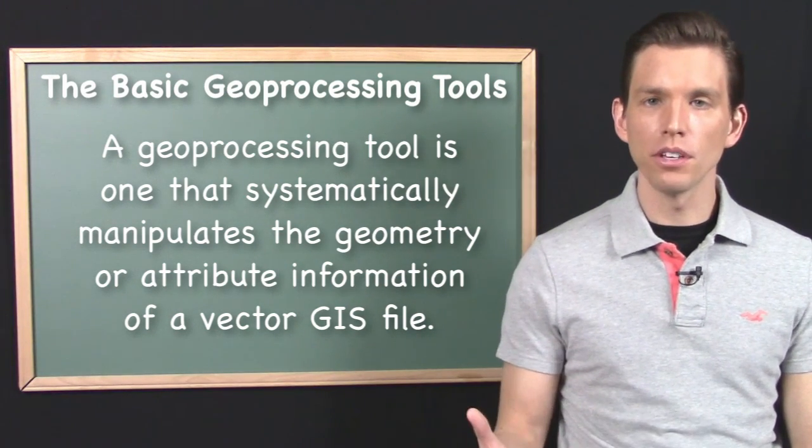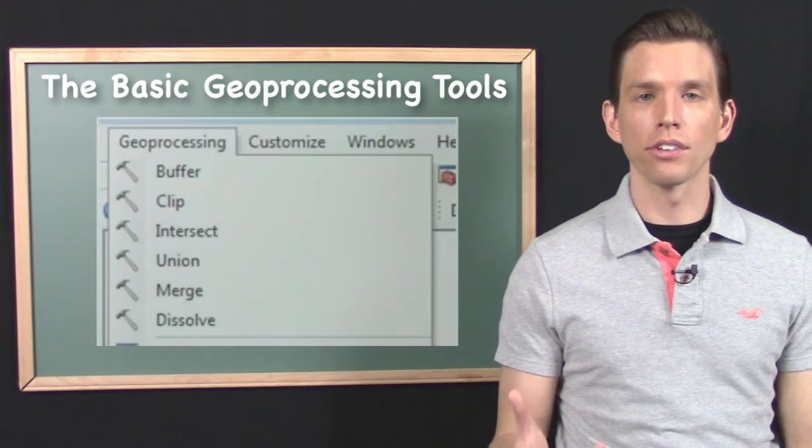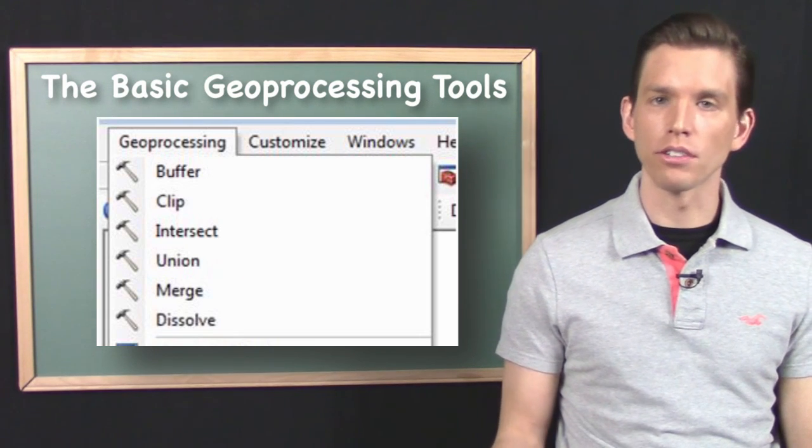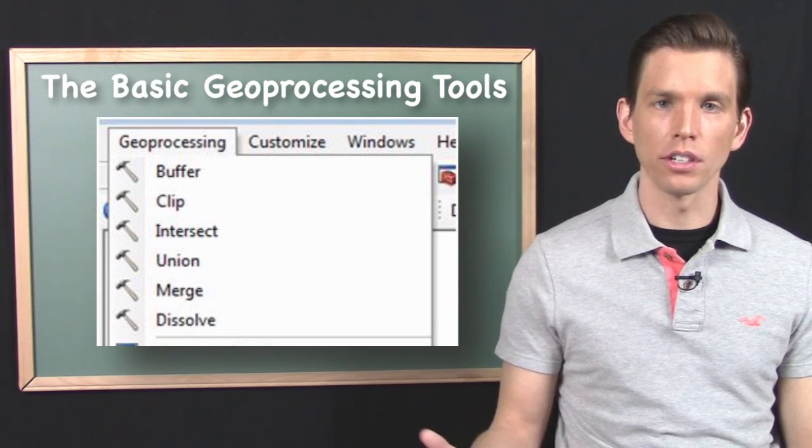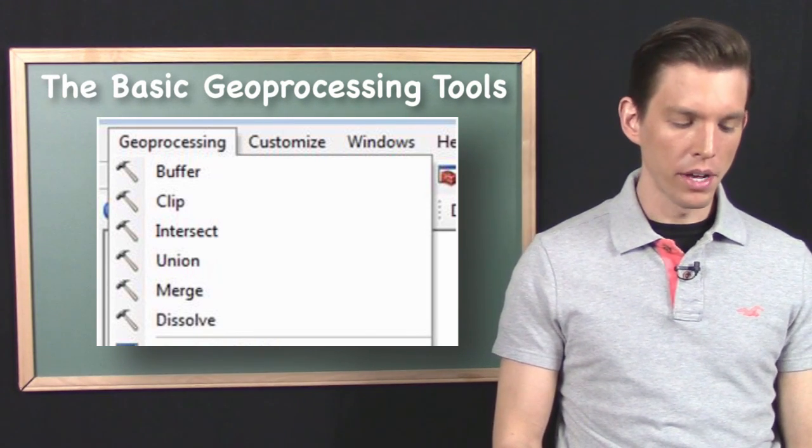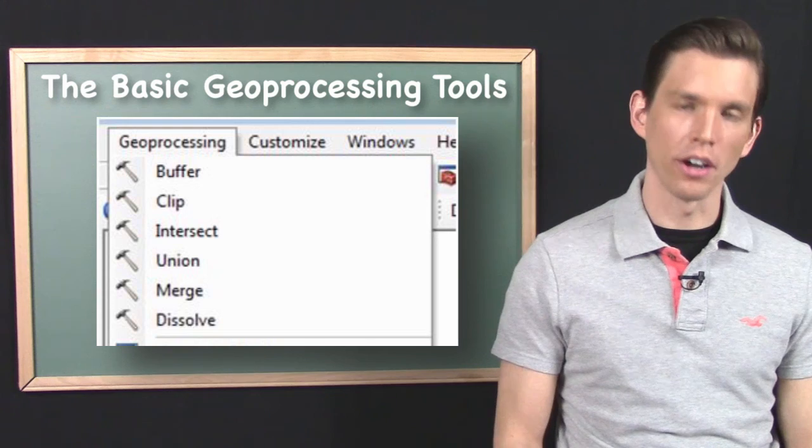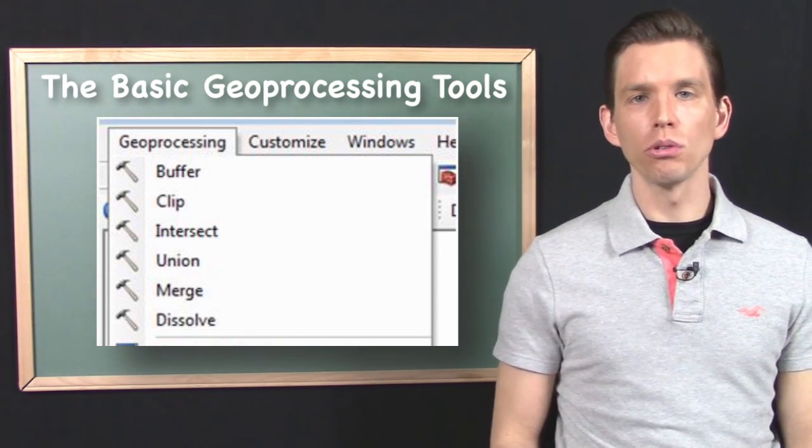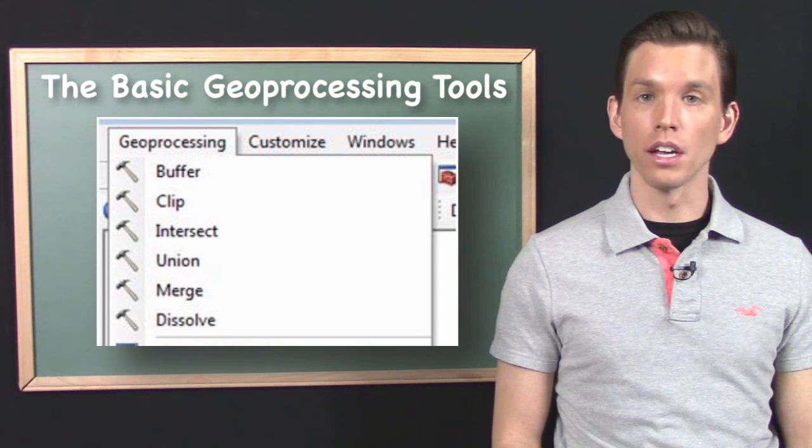So if you do happen to be using the ArcGIS software platform, you're going to find that it's very easy to access all six of these basic geoprocessing tools. If you take a look in ArcGIS, you're going to find along the top of the menu bar, there's going to be an option for geoprocessing. You click on it and you get this drop-down menu that's going to show the basic six geoprocessing tools. It won't have that bonus seventh on there, but it does have the core six or the basic six. And each one of these tools that you can access in this way systematically manipulates the attribute tables and the geometry of vector data.